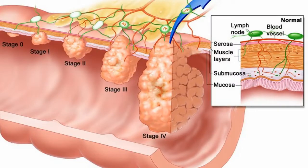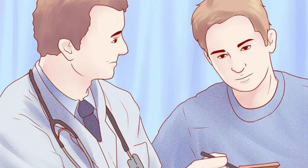Difference Between Piles and Hemorrhoids. Hemorrhoids and piles are the same thing — there is no difference between them. Sometimes people think that normal anal cushions are called hemorrhoids and swollen anal cushions are called piles. Some say that hemorrhoids are internal and piles are external. This is not the case.